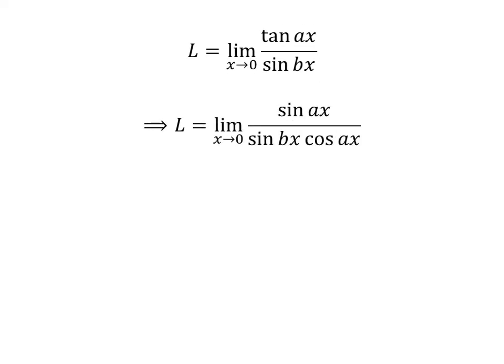We know tangent of a times x is equal to sine of a times x upon cosine of a times x. So, L is equal to the limit of sine of a times x upon sine of b times x times cosine of a times x as x approaches 0.